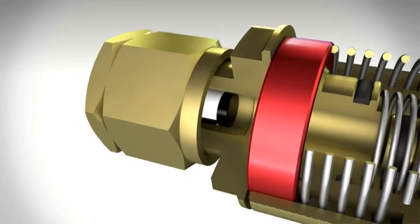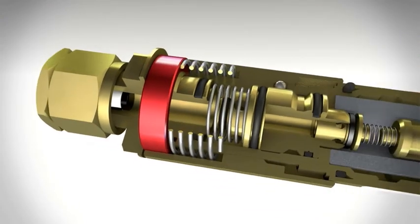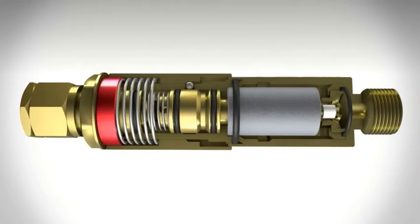Flashback arrestors from VIN are compact and robust. They can be installed anywhere irrespective of the orientation.